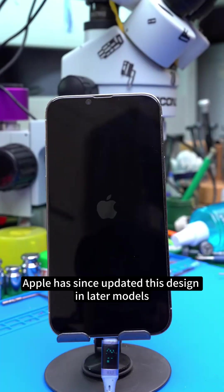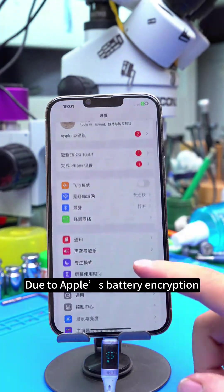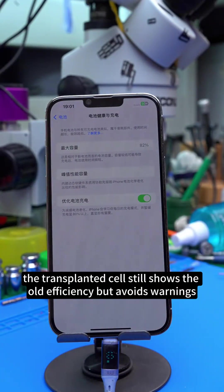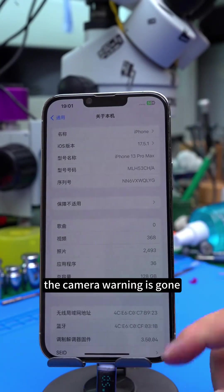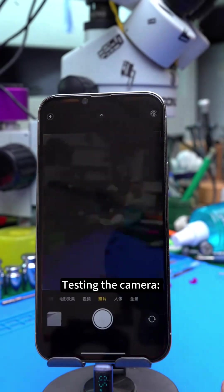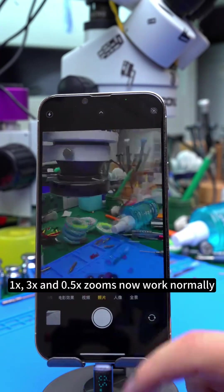Post-reboot, checking battery health. Due to Apple's battery encryption, the transplanted cell still shows the old efficiency but avoids warnings. Under Settings, About This Phone, the camera warning is gone. Testing the camera: 1x, 3x, and 0.5x zooms now work normally.